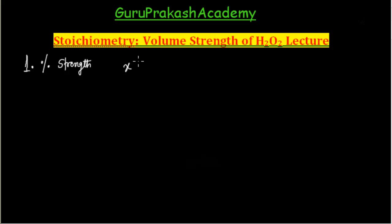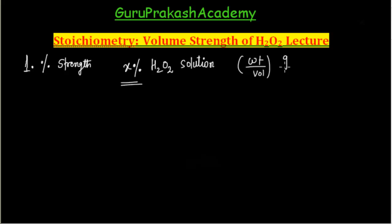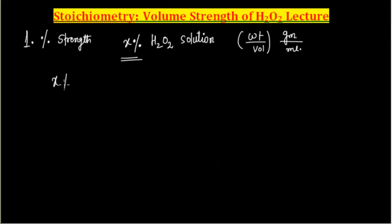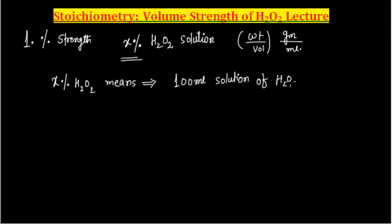When we say x% H2O2 solution, this percentage is basically weight by volume. Weight is taken in grams and volume is generally taken in milliliters. So x% H2O2 means if I take 100 mL of solution, it will contain x grams of H2O2.